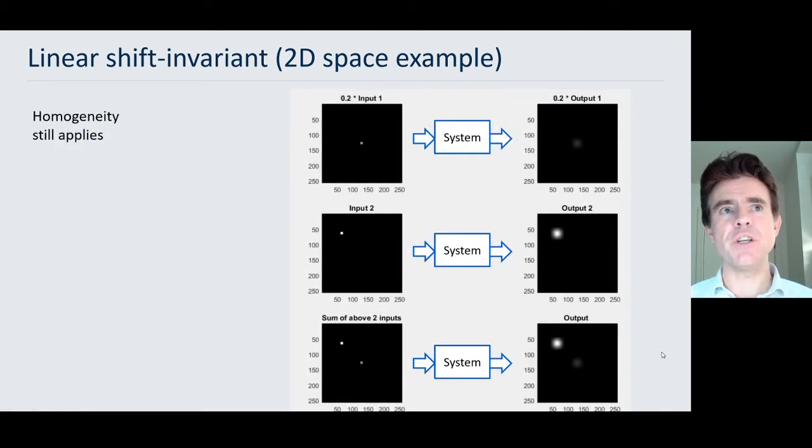And just to say that homogeneity, that kind of scaling property, still applies for LSI systems, it's still a linear system. So in other words, if I had only 0.2 times the brightness or amplitude of that point source of light, that star in the night sky, whatever it is we're calling this input example, if I scale it by 0.2, then the output is correspondingly scaled by 0.2. I haven't put any scaling on the second input here, so the output looks the same, but it's a linear system. So when I put both of those in together, so that's the 0.2 of the original input, and then just the standard second input, then the output is just the sum of those two individual outputs.